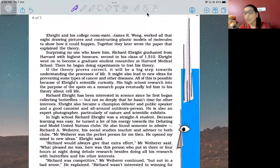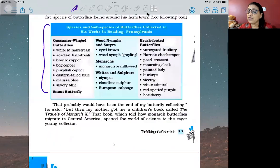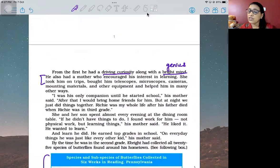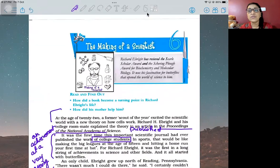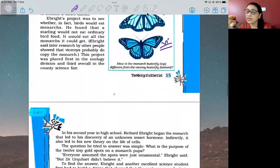Ebright and his college roommate James R. Wong - remember this name very well - worked all that night drawing pictures and constructing plastic models of molecules to show how it could happen. Together they later wrote the paper that explained the theory. What we read at the very first - his theory that was published - this was that theory which was published in the science journal.